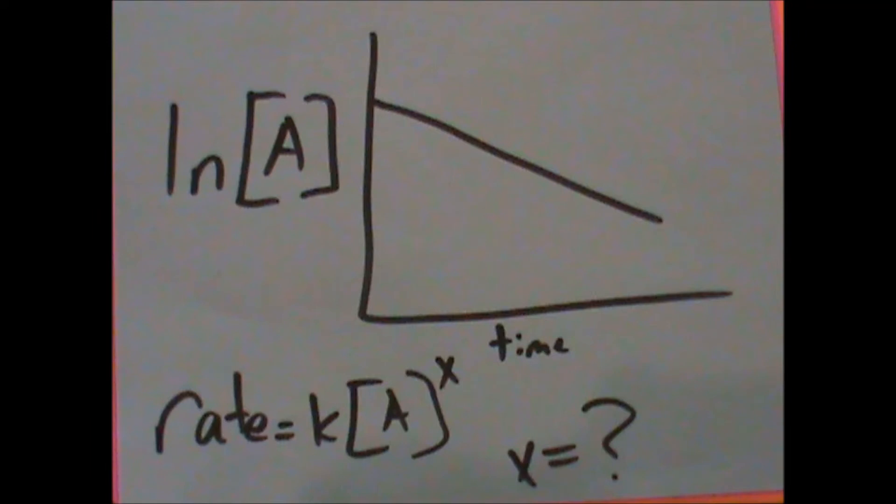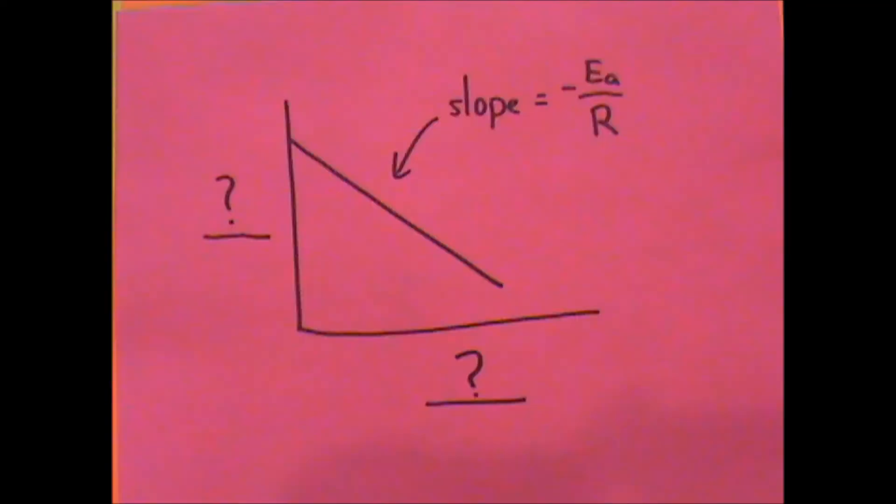x is 1, natural log of k versus 1 over absolute temperature.